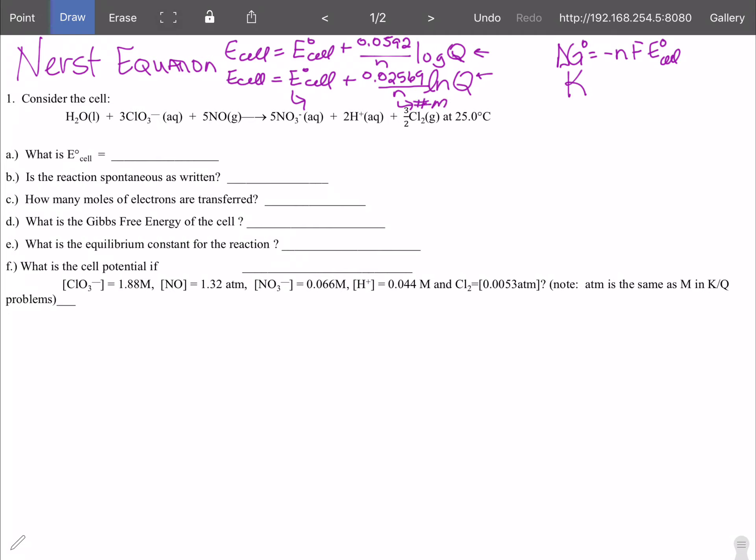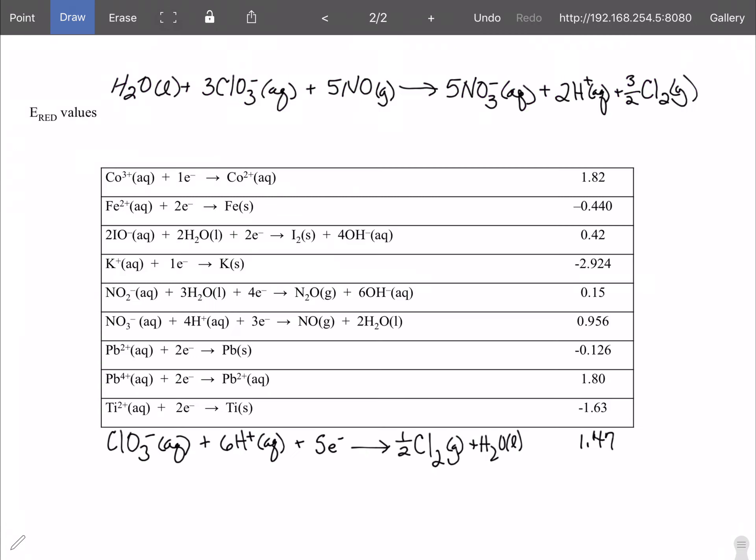In order to do that we'll use the reaction given. In order to do the cell potential we'll need to use the standard reduction potential chart as given. There's a large one that I give my class and then on tests I truncate it and make it smaller. So in order to get started first thing we need to do is identify what's oxidized and reduced. To make it simple I've rewritten the equation over the standard reduction potential values because we'll need those when we do our cell.